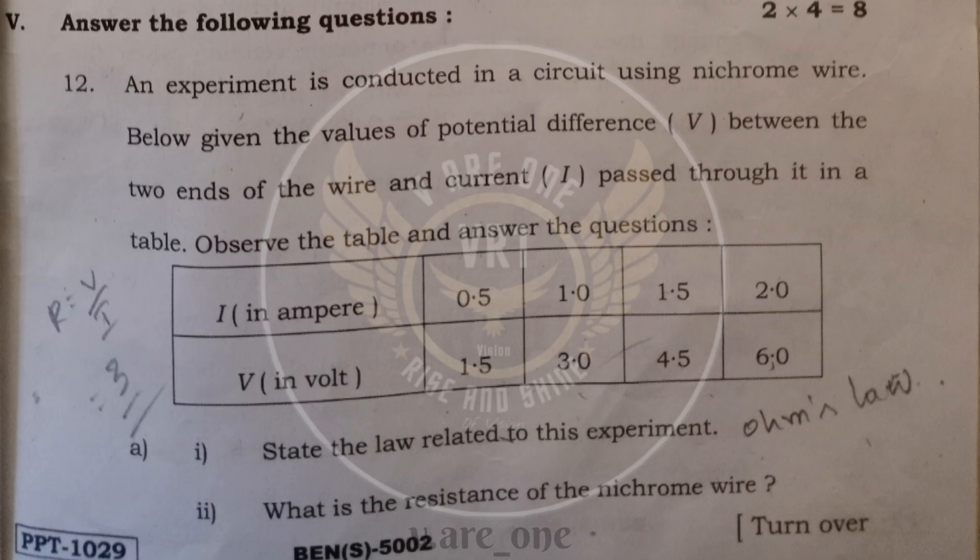And twelfth question. An experiment conducted in a circuit using nichrome wire below given the values of potential difference between two ends of the wire and current passed through in a table. And here in table they have given current and potential difference. And questions like state the laws related to this experiment and this is related to Ohm's law. Because when the current is increasing and the potential difference is also increasing. So current is directly proportional to potential difference. So when the potential difference increases current will also increase.